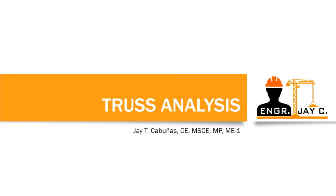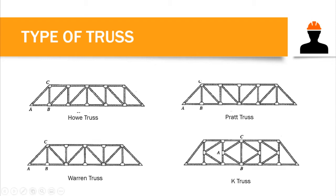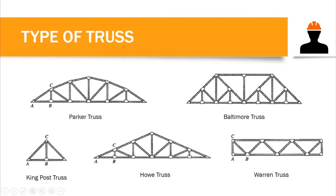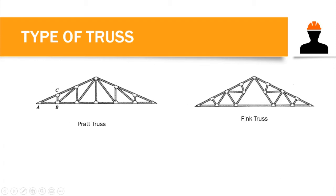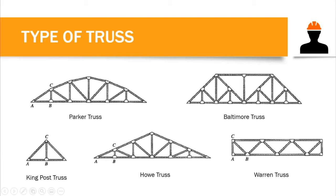Let me give you some examples of trusses applied in construction. We have the Howe Truss, the Pratt Truss, the Warren Truss, the K Truss — where the members create a K pattern — the Parker Truss, the Baltimore Truss, the King Post Truss (the simplest one), and another example of the Howe Truss. We also have a triangular truss, a Warren Truss, the Pratt Truss, and the Fink Truss. We can recognize the type of truss by looking at the triangular pattern of its members.